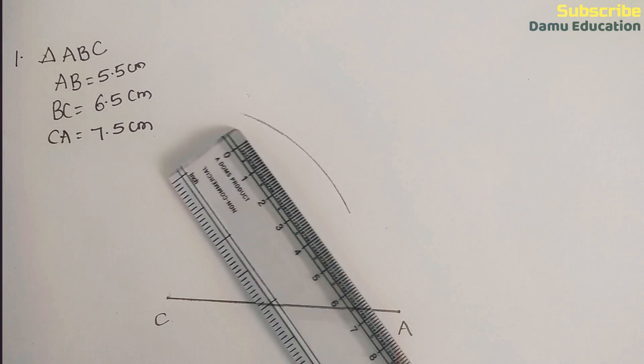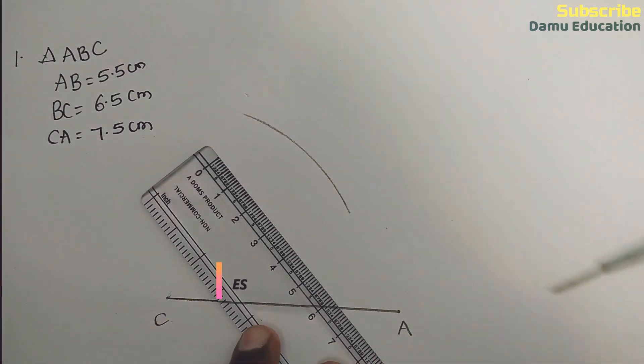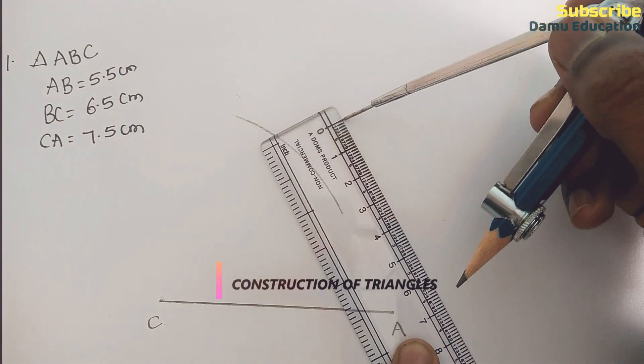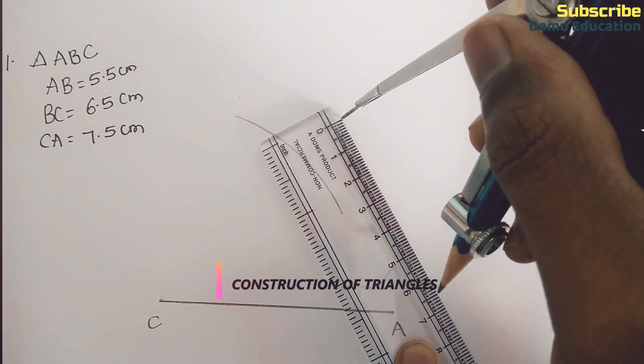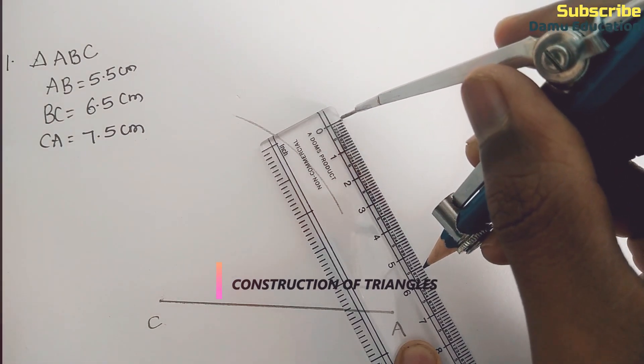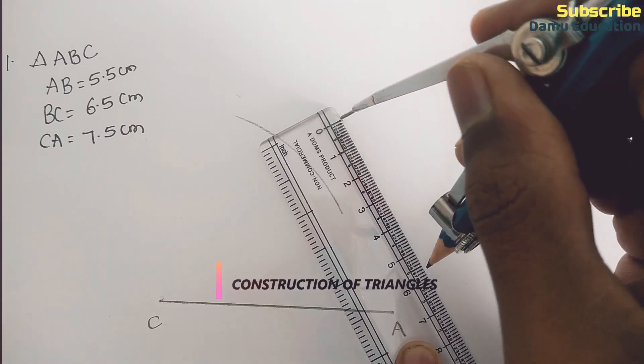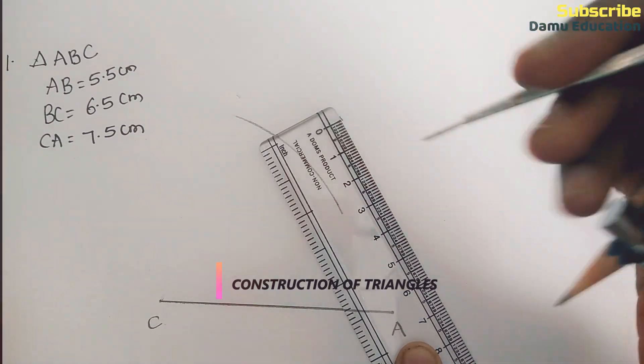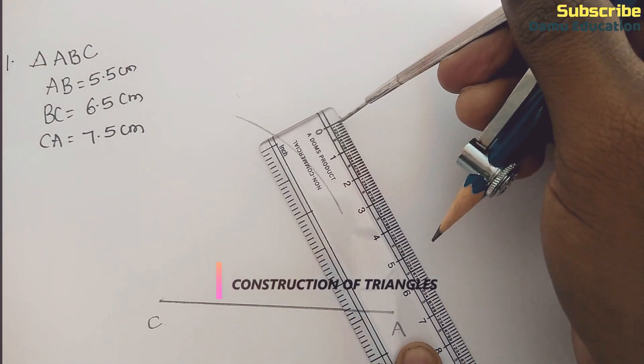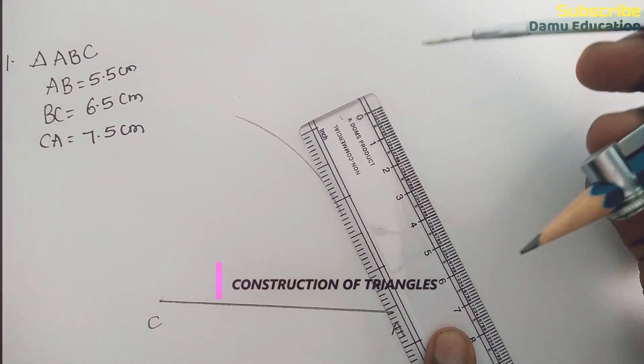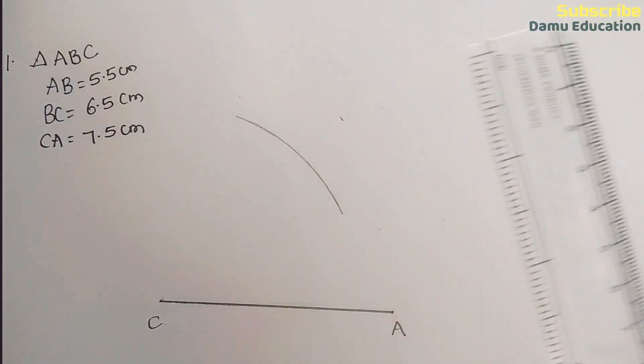The distance is 5.5 centimeters. Take the measurement the same way - place the needle at zero and elongate up to 5.5. So this distance will be 5.5. Make it like this, and this is the distance of 5.5.